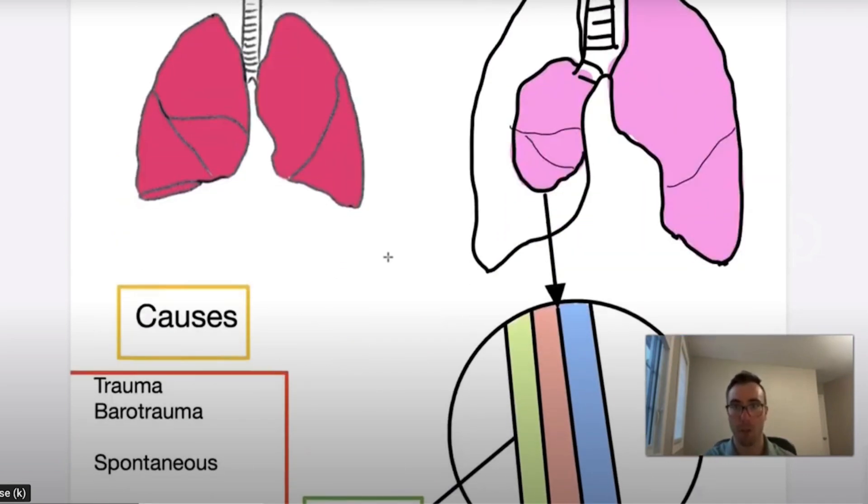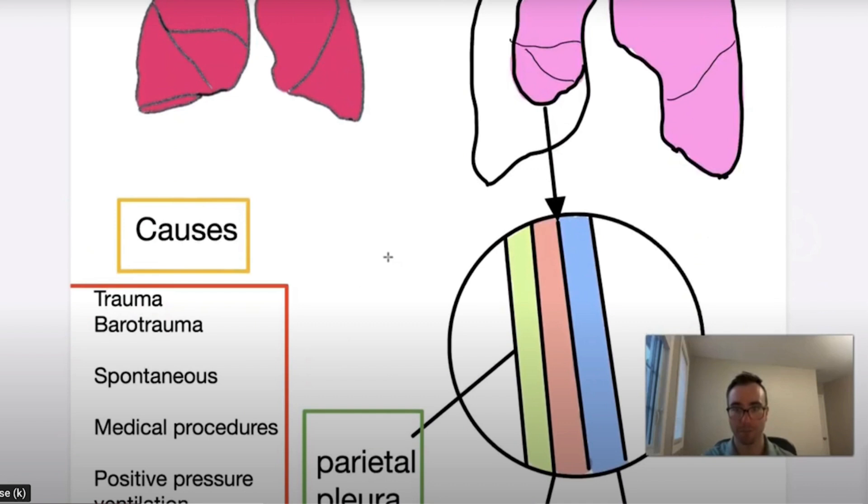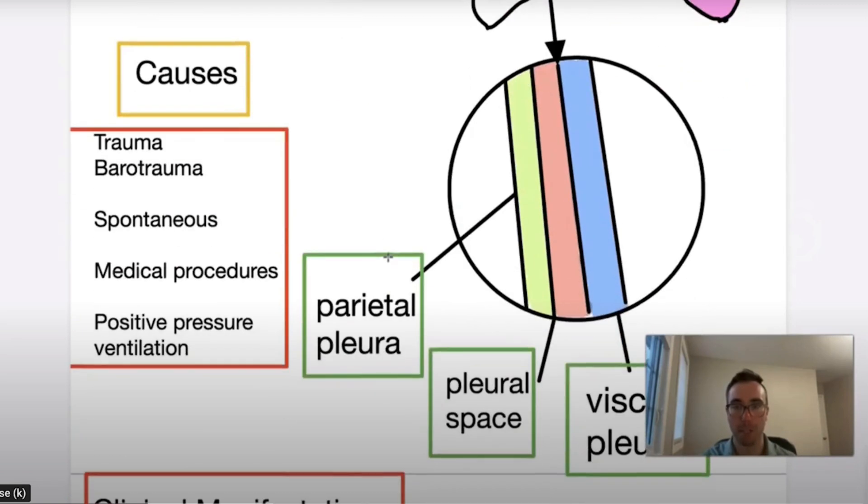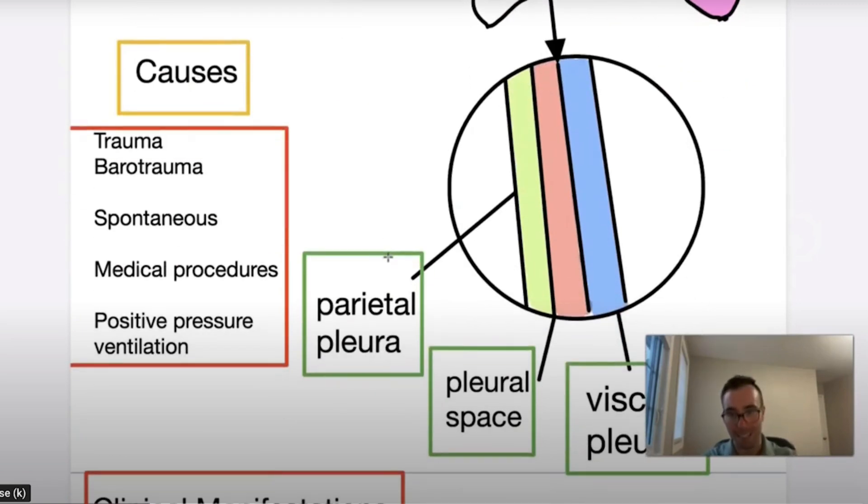So overall, we know that a tension pneumothorax develops because you have this accumulation of air in the pleural space, which is called the potential space. We have the serous membrane that adheres to our lungs. The layer that is right on contact of our lung is the visceral pleura. The one layer that outlines the chest cavity is the parietal pleura. And in that space, you have the pleural space, and this is where air can accumulate. This is where blood can also accumulate, or both.